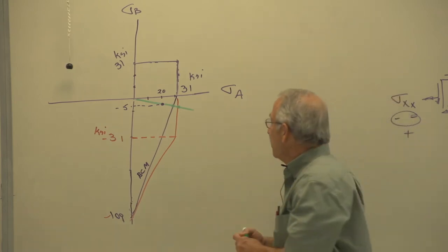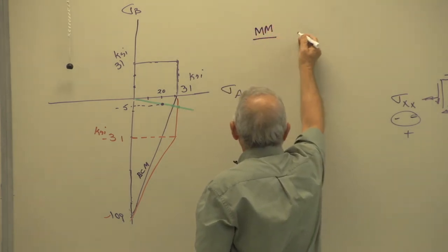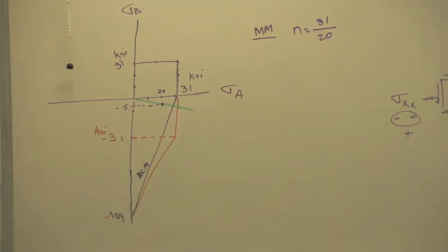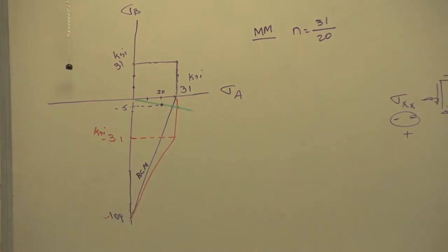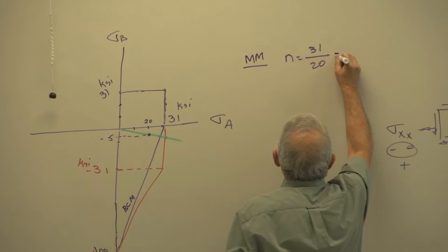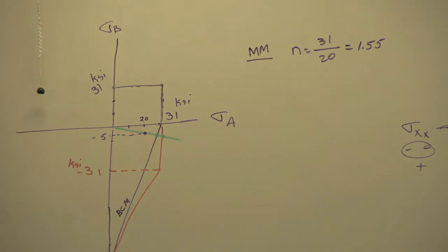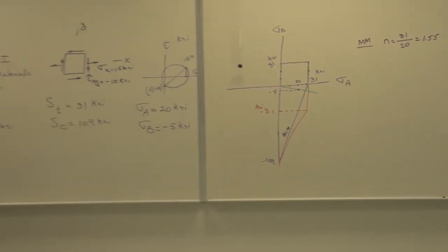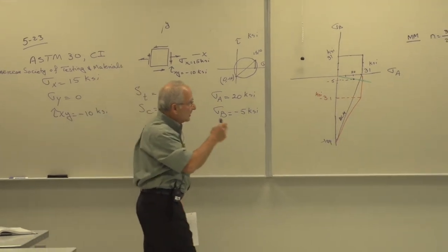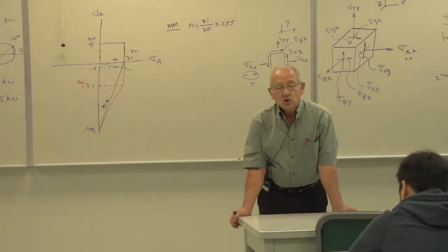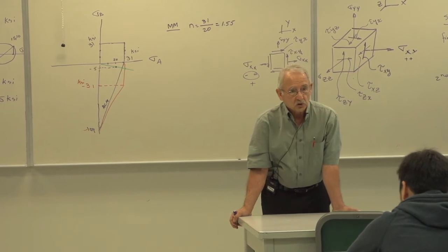The exact factor of safety according to the modified Mohr theory, which is the easier of the two, is 31 over 20 — that comes out to be 1.55. Now for the brittle Coulomb-Mohr, you can use the equations, but I am not a fan of just plugging numbers into equations. You need to know what you're doing and why, so I will ask you to do the procedure I went over last time.